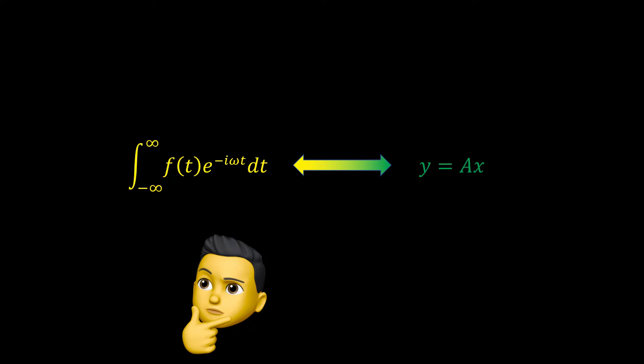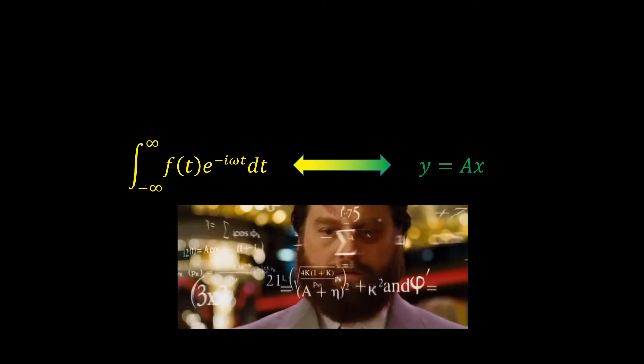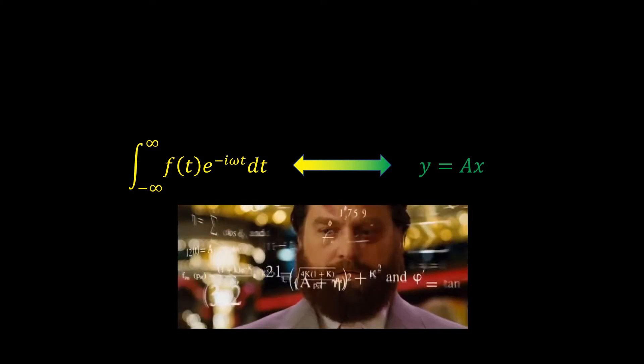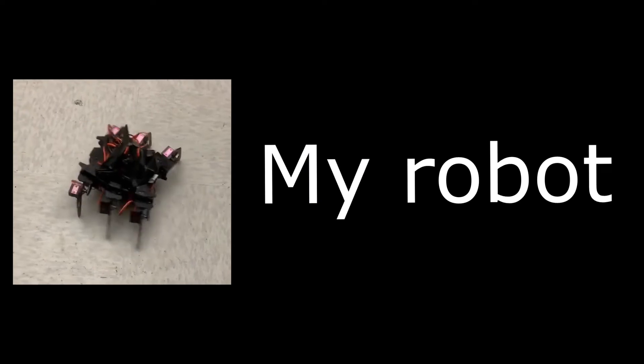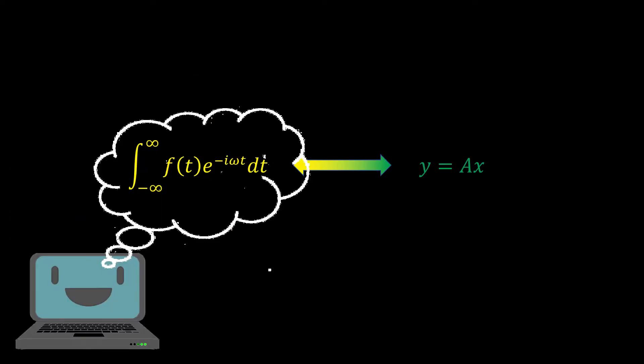That's right, even though intuitively these two operations don't seem to have a connection, there is a deeper relationship to be explored here. Our motivation for trying to find out if there is a relationship is that matrix multiplication is an operation that's very easy for robots and computers to work with. Since the Fourier transform is such an important operation, if we can turn that into a matrix multiplication, that makes it very easy for computers to work with.